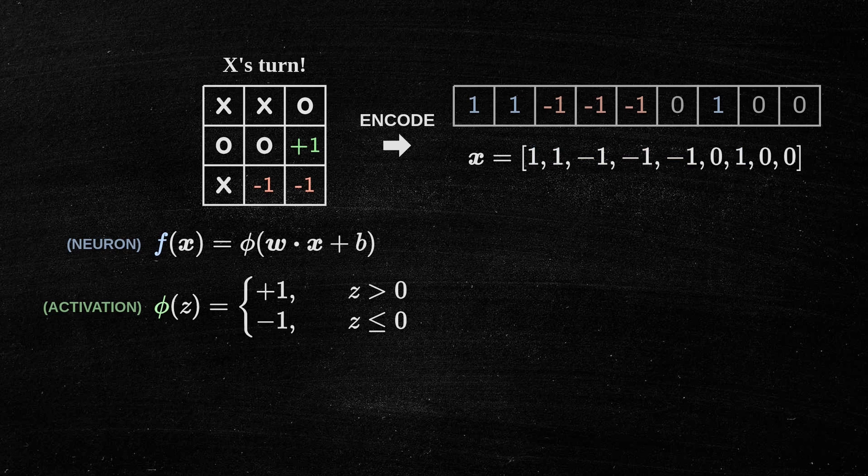The perceptron neuron then calculates the dot product between the input vector and a vector of weights, adding a bias term to the result. For example, suppose we have the following weights and the following bias.